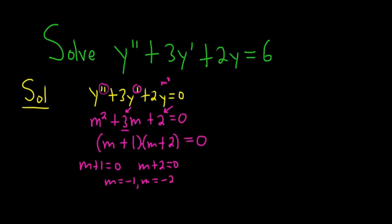So we have the case of what's called distinct real roots. So whenever you have distinct real roots and you have a homogeneous DE, your complementary solution or complementary function is going to be c1 e to the negative x plus c2 e to the negative 2x. It's really negative 1x, but I just put negative x. So that's y sub c.